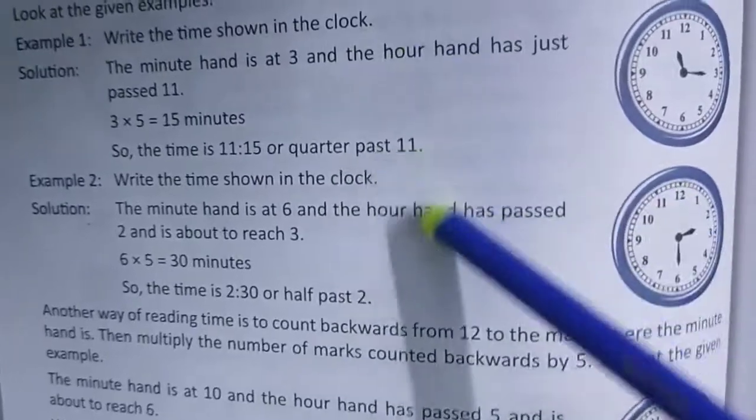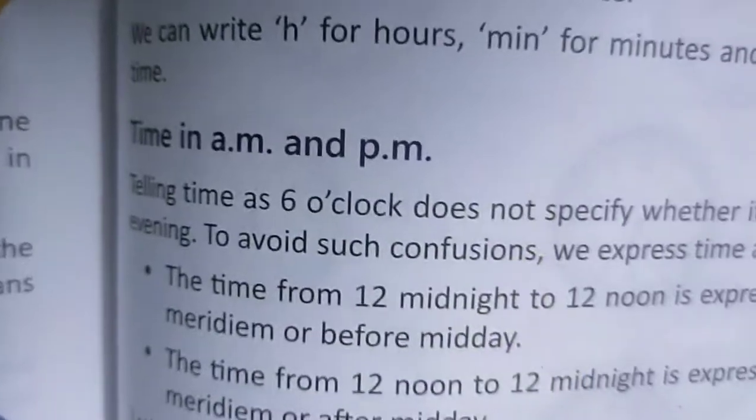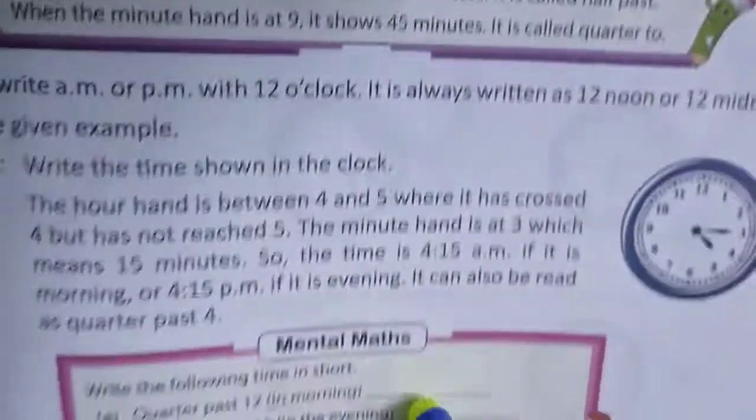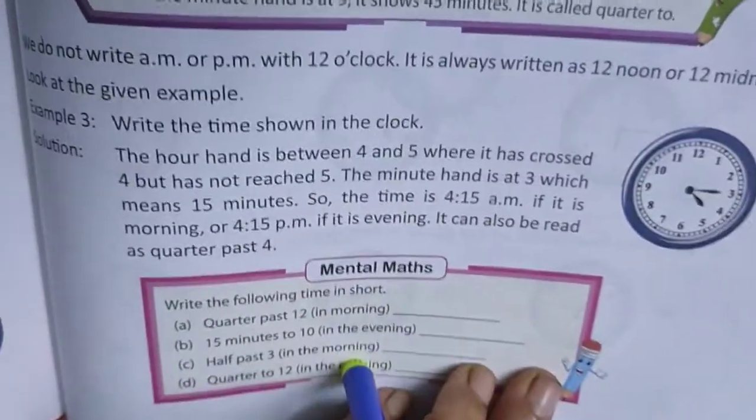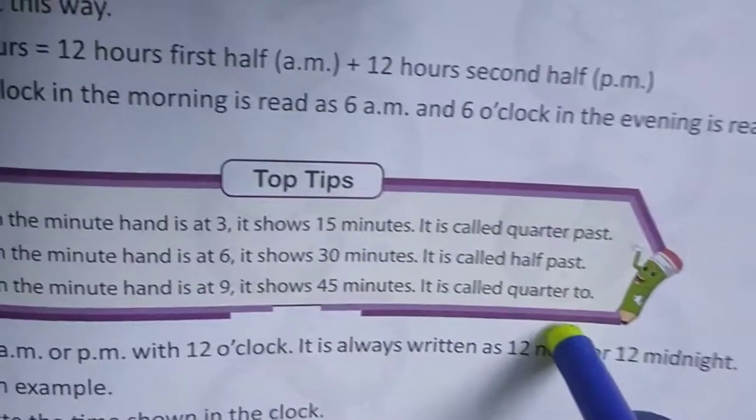Then Time, Seconds, then PM, AM. After that, Mental Maths are there, you solve it. Then Quarter Past, Half Past, Quarter to. These 3 are there. Now come to the exercise.